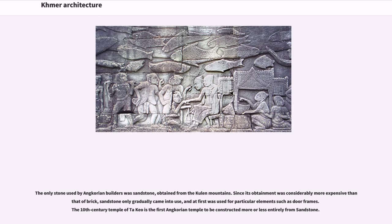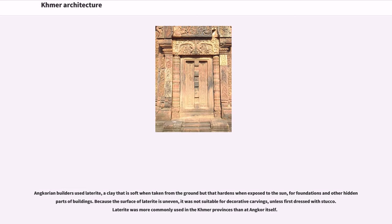The only stone used by Angkorian builders was sandstone, obtained from the Kulen Mountains. Since its obtainment was considerably more expensive than terra-cotta brick, sandstone only gradually came into use, and at first was used for particular elements such as door frames. The 10th-century temple of Takeo is the first Angkorian temple to be constructed more or less entirely from sandstone. Angkorian builders also used laterite, a clay that is soft when taken from the ground but hardens when exposed to the sun, for foundations and other hidden parts of buildings. Because the surface of laterite is uneven, it was not suitable for decorative carvings unless first dressed with stucco.